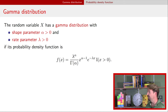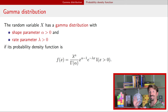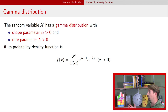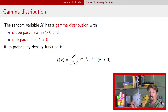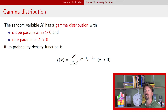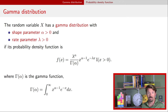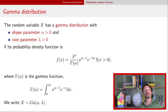A random variable has a gamma distribution if it has this probability density function. Look at that indicator function first to determine the support — it has support over all positive real numbers. The function is a little complicated. The key is to recognize the kernel: the random variable raised to the alpha minus 1 power, and e to the negative lambda x. The gamma function out front is defined by a particular integral. We will denote a gamma random variable as x tilde Ga(alpha, lambda).